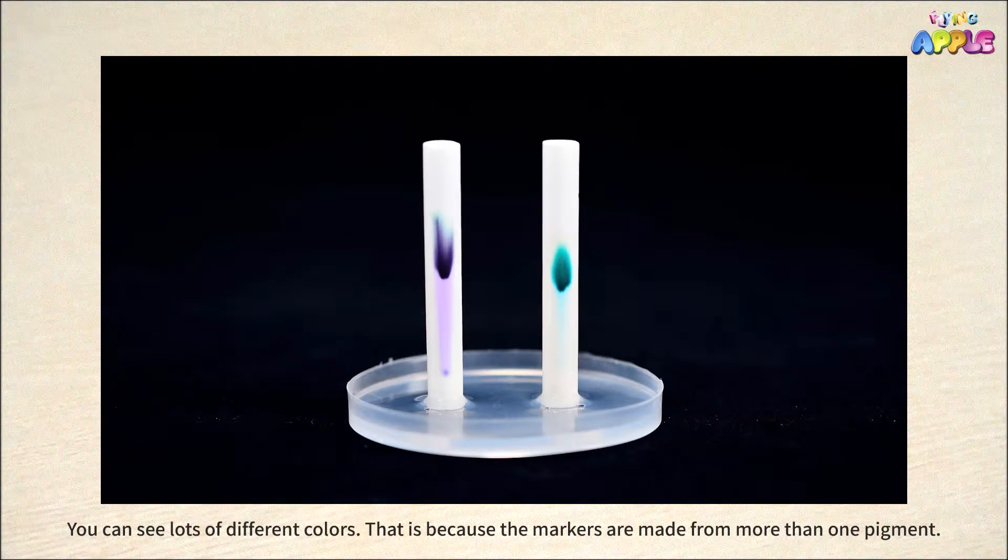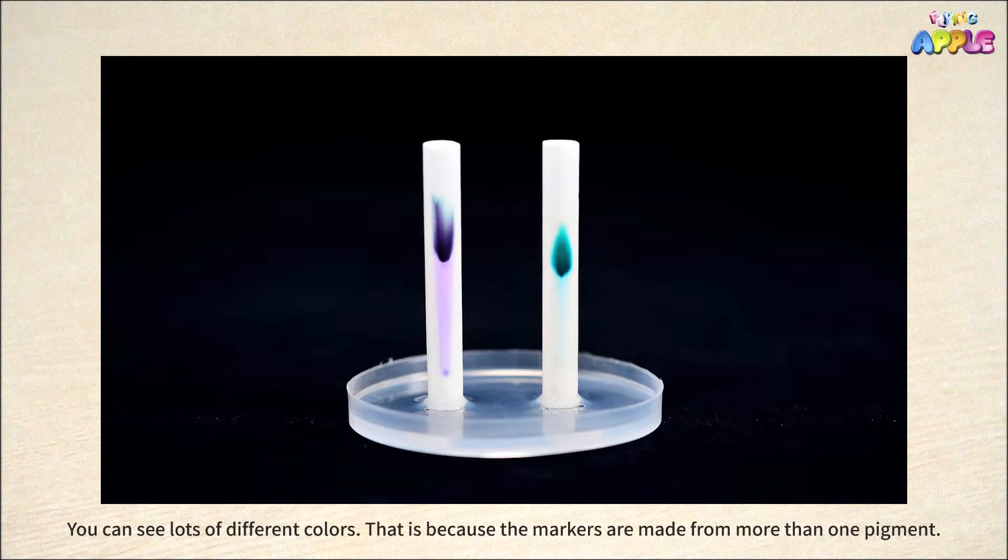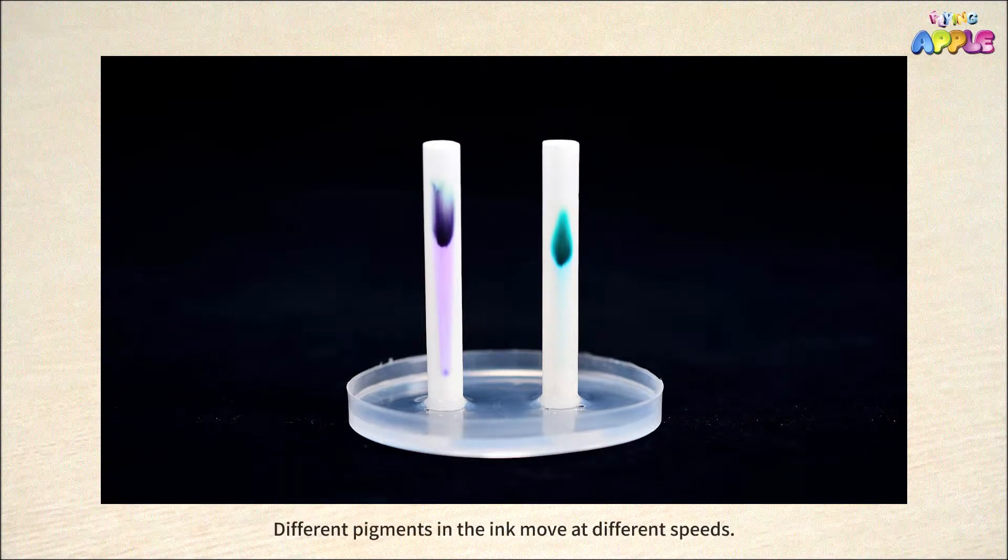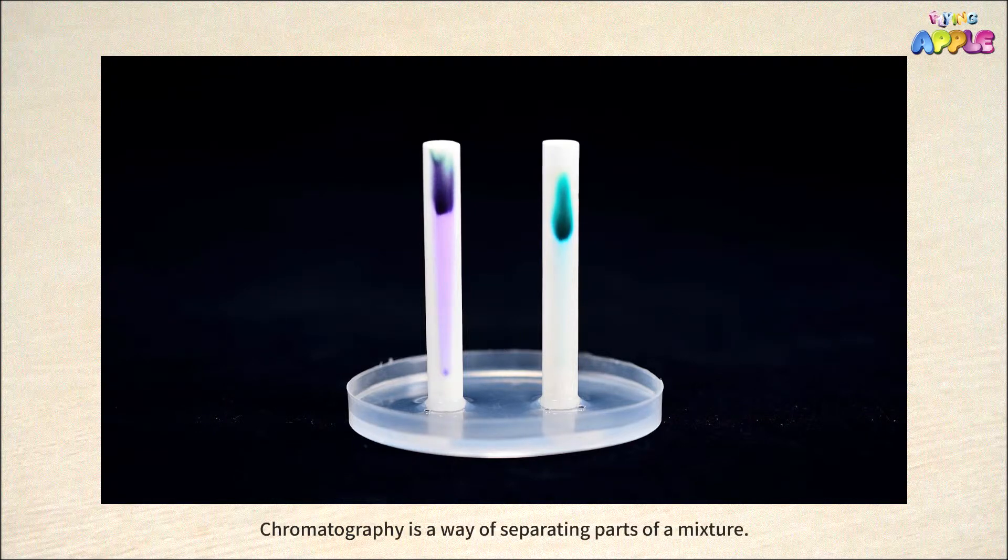That is because the markers are made from more than one pigment. Different pigments in the ink move at different speeds. Chromatography is a way of separating parts of a mixture.